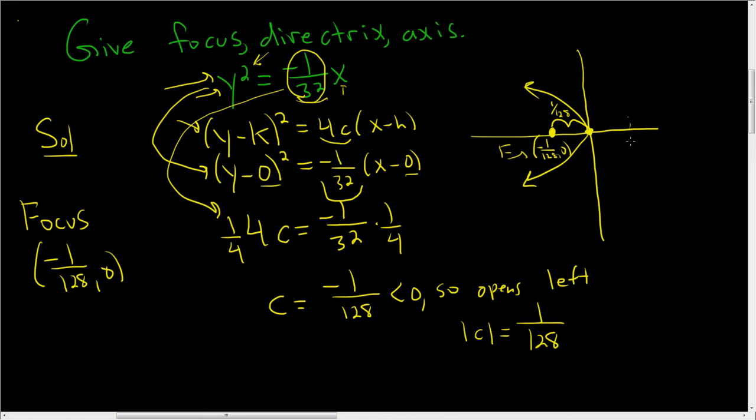The directrix is right behind the parabola. It's like behind it. It opens away from it. So this distance here is also 1/128. This is a vertical line. So the equation of this directrix is x equals negative 1 over, x equals 1/128, not negative. So in this case, the directrix is x = 1/128.